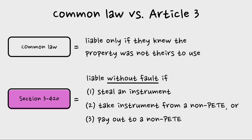Under Article 3, they are strictly liable. If you steal the instrument, that's conversion. But the less intuitive and more expansive part is: it's not just the person taking the instrument. If you take the instrument from someone who is not a person entitled to enforce it, then you are potentially on the hook for conversion under Article 3 — even if you didn't realize it — even though that is nowhere near what would be thought of as conversion under common law.